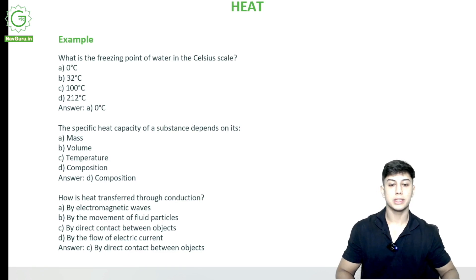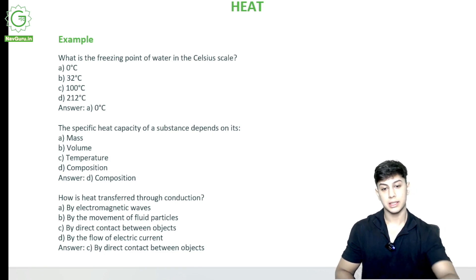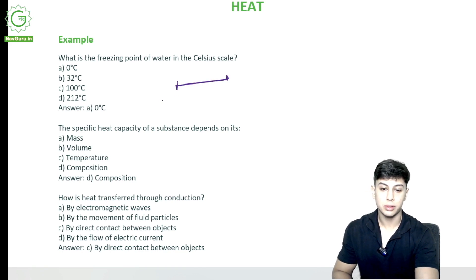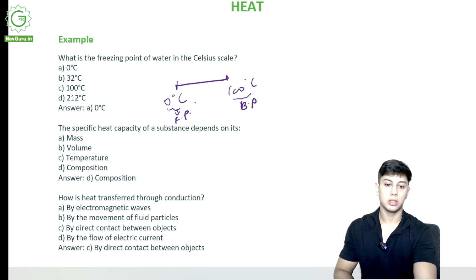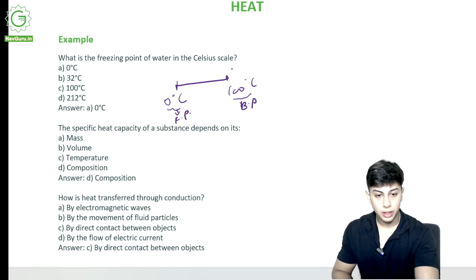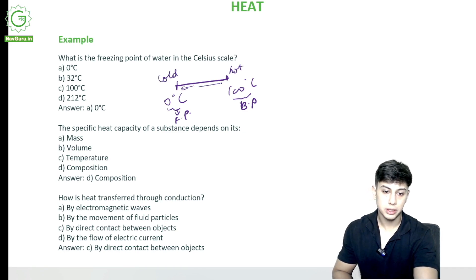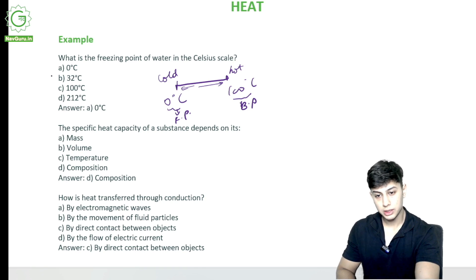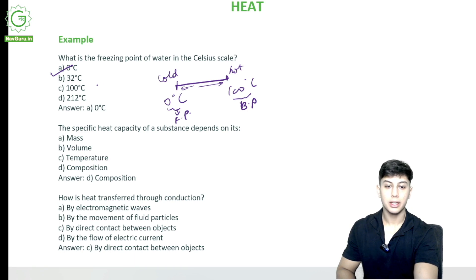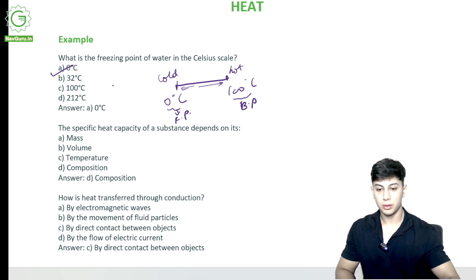What is the freezing point of water in the degree Celsius scale? The Celsius scale ranges from zero to 100 degrees Celsius — 100 is the boiling point and zero is the freezing point. So the freezing point is zero degrees Celsius, and what was 100? It was the boiling point.